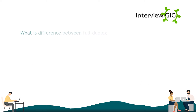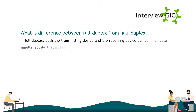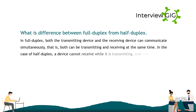What is the difference between full duplex and half duplex? In full duplex, both the transmitting device and the receiving device can communicate simultaneously — both can be transmitting and receiving at the same time. In the case of half duplex, a device cannot receive while it is transmitting, and vice versa.